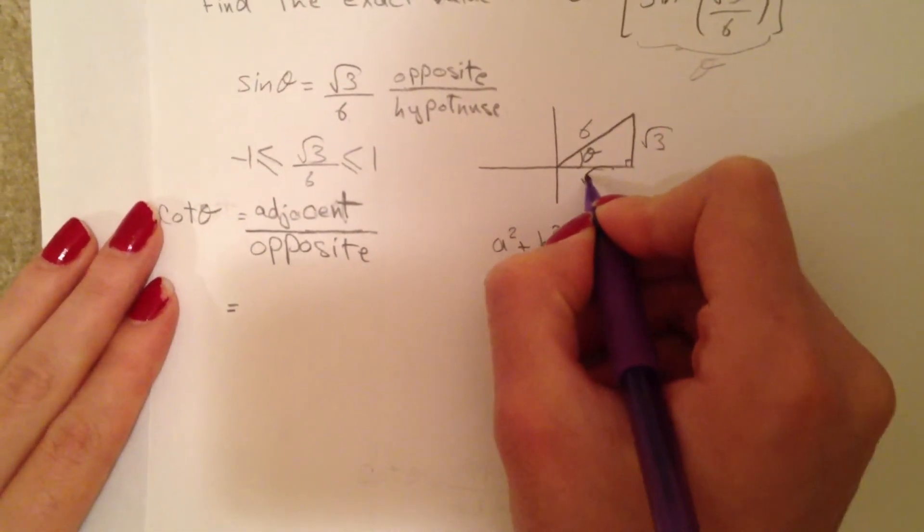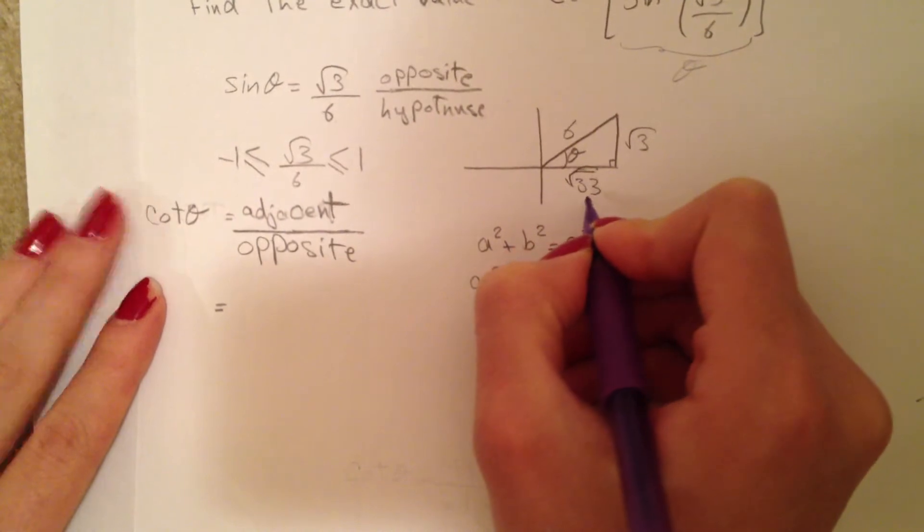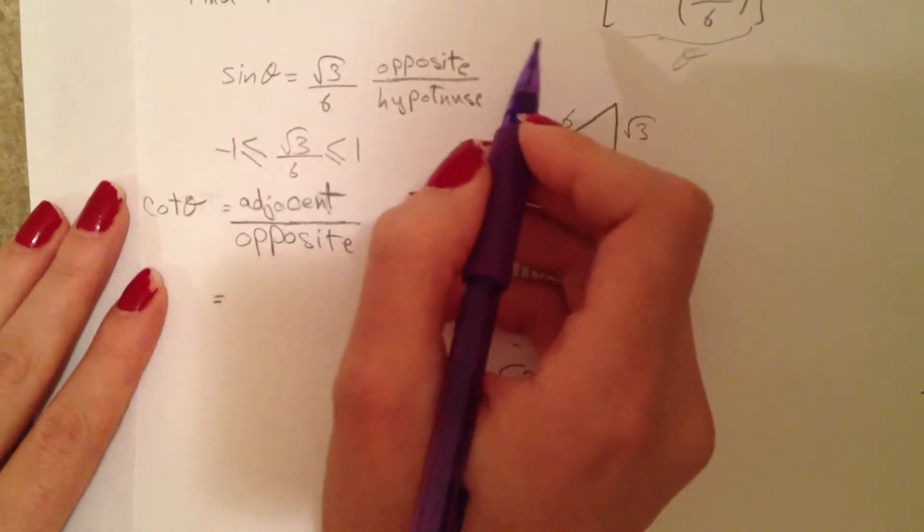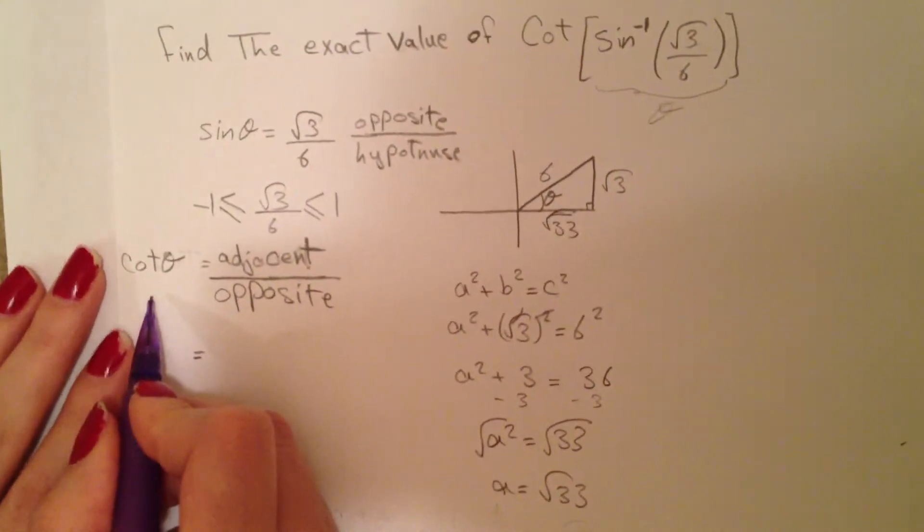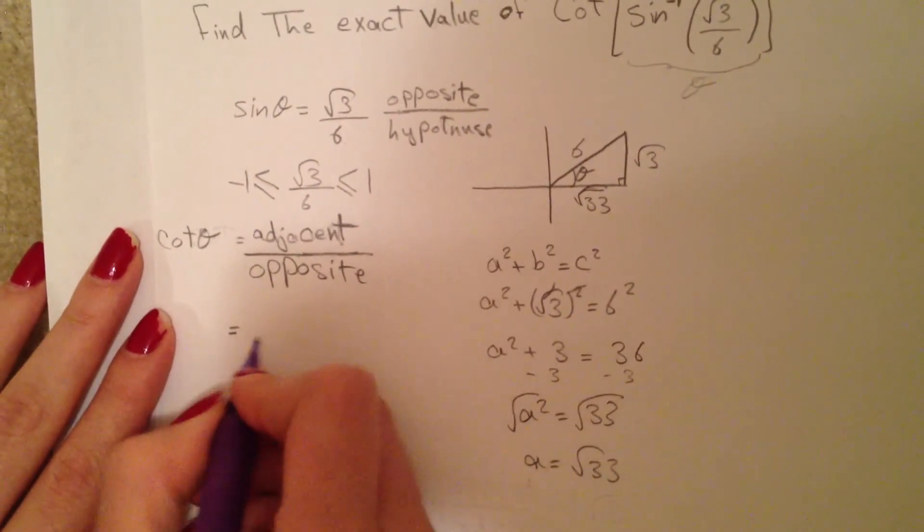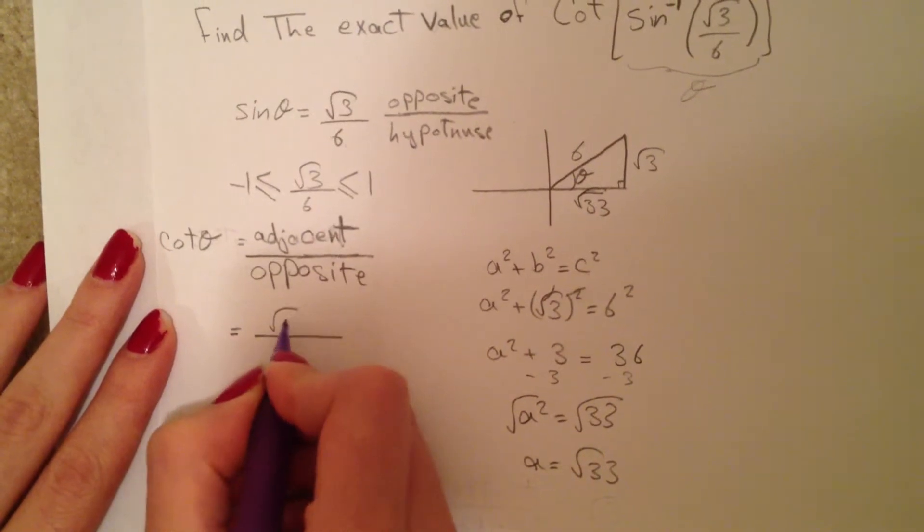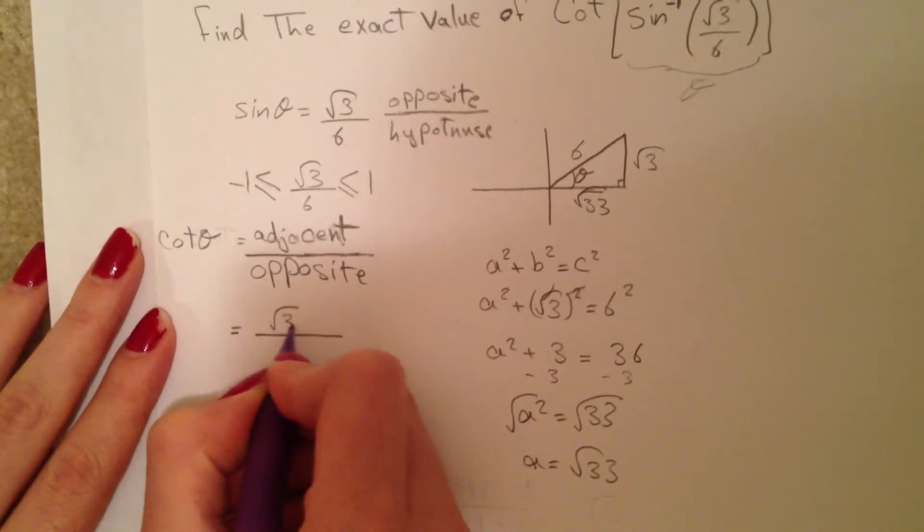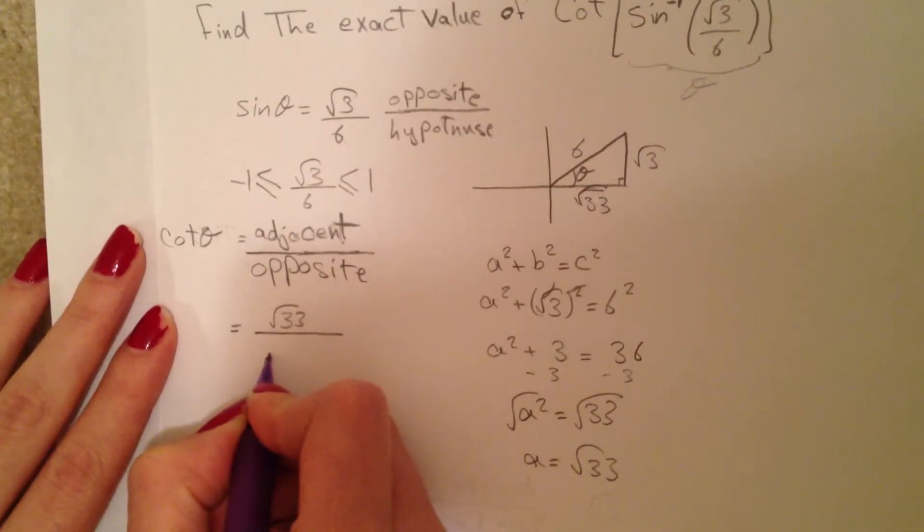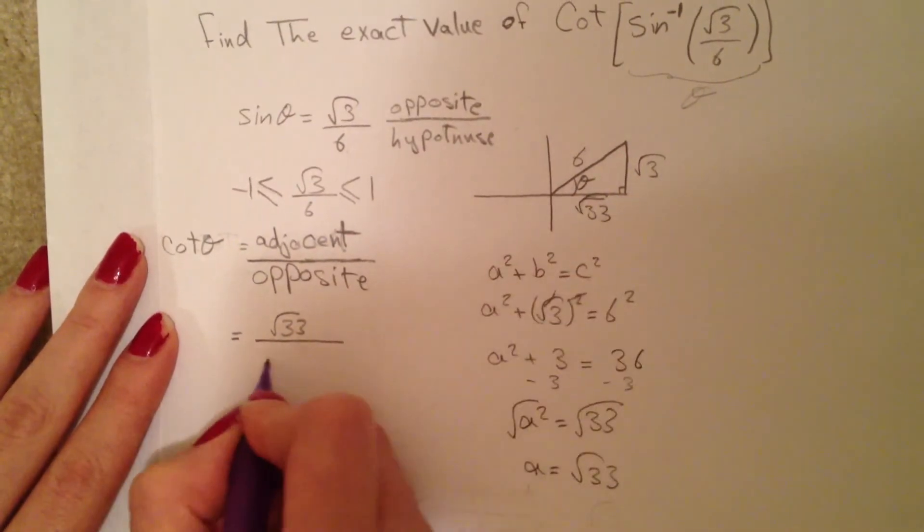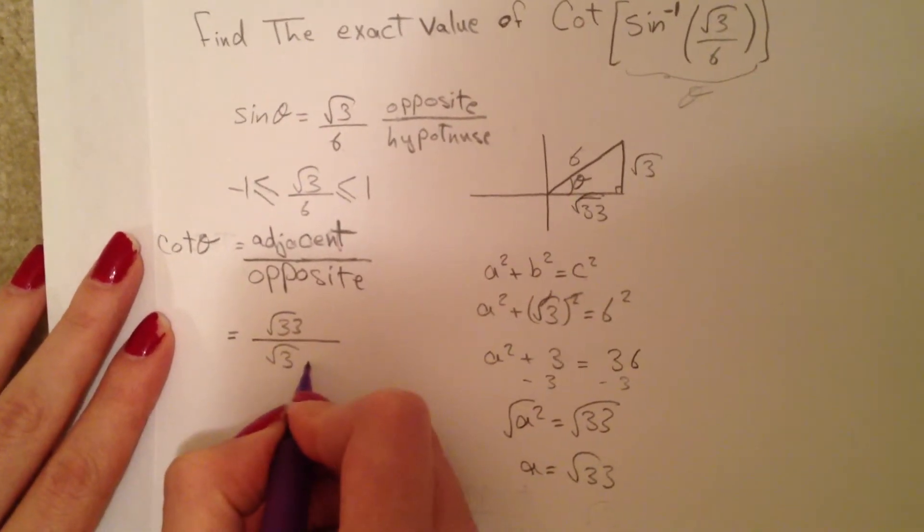The adjacent side is √33. Now to find our cotangent. Cotangent is adjacent over opposite. Our adjacent is √33 divided by the opposite side, which is √3.